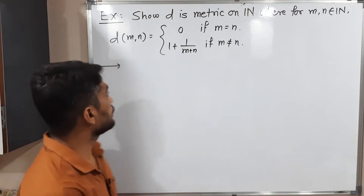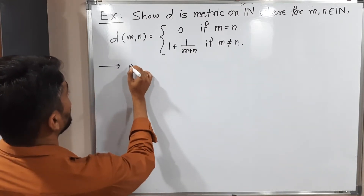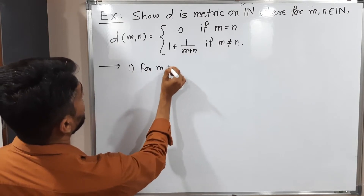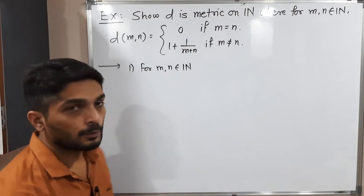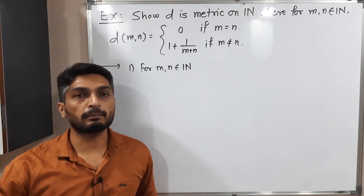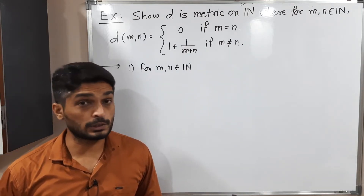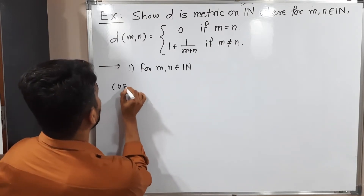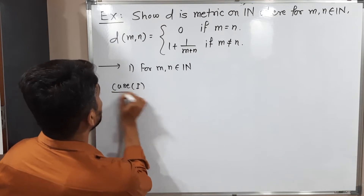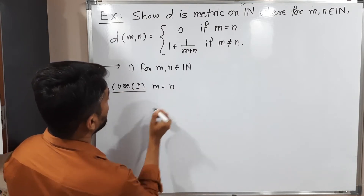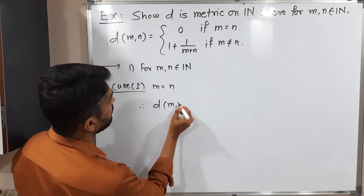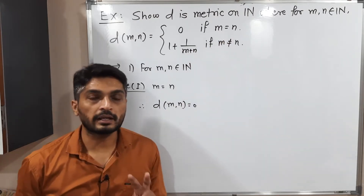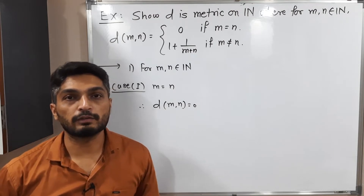Let us start proving the first condition. For any m, n belonging to the set of natural numbers, we need to prove that D(m,n) is greater than or equal to 0 — that is, it is non-negative. Case 1: m is equal to n. Therefore D(m,n) is equal to 0 by definition, since if m and n are the same, the value of D is 0.